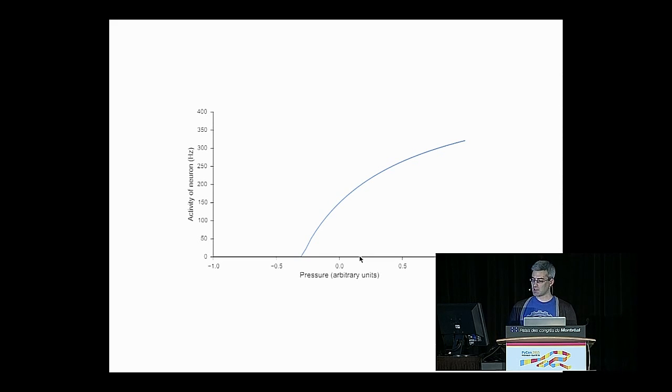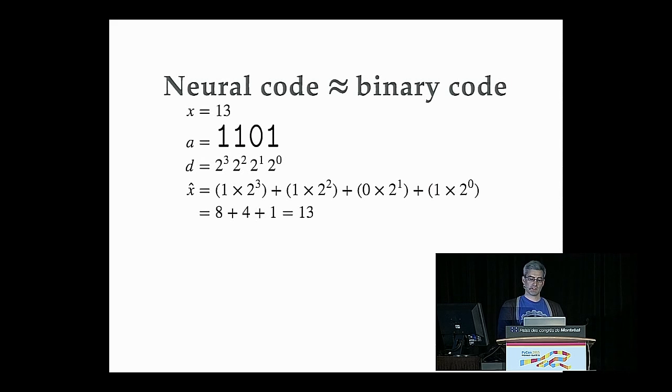And so the way that we do that in Nengo is actually very analogous to binary coding. So in computing, binary coding is how we represent information. If we wanted to represent, for example, the integer 13, we know that we can encode that as the binary string 1101. Each of these bits, each of these binary digits represents a different power of 2. So at the low end, this 1 represents 2 to the 0, or 1. At the high end, this 1 represents 2 to the 3rd, or 8.